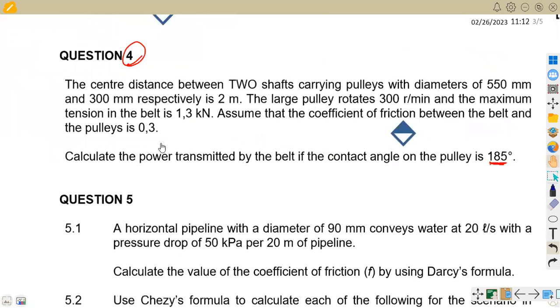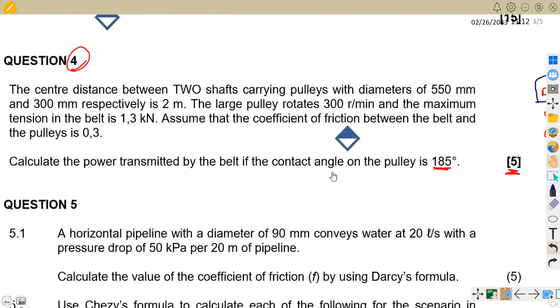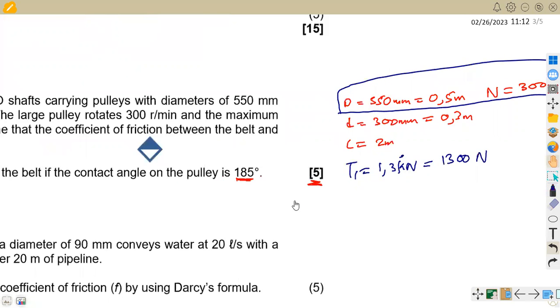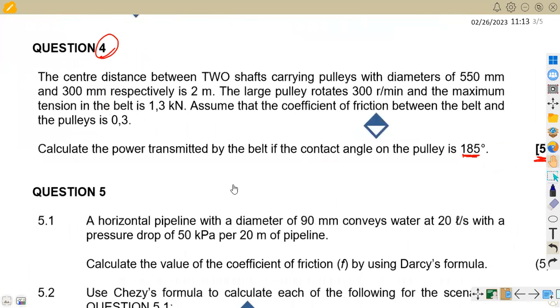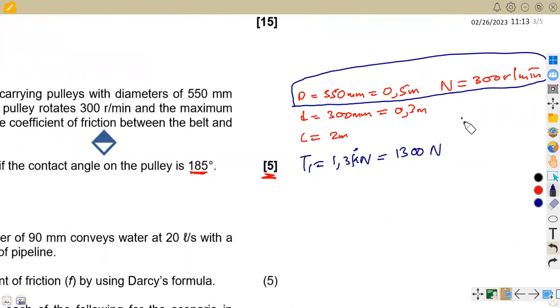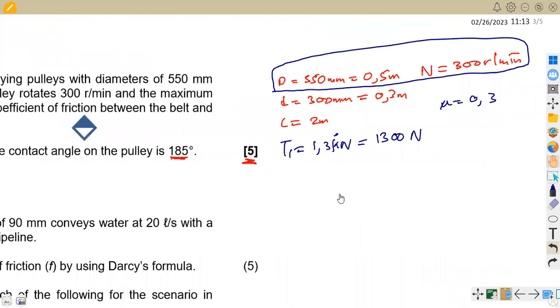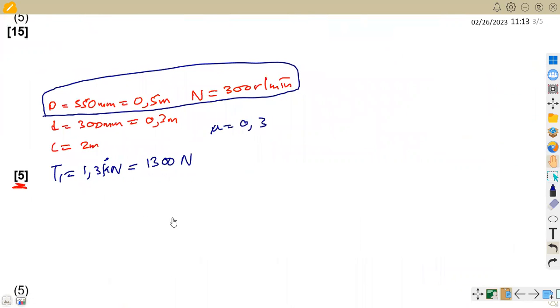We are given the tension in the belt, the maximum allowable tension, which is T1. Remember, that's your tight side. So T1 is 1.3 kilonewton. Kilo means 1000, so by multiplying by 1000, that's 1300 newton. And the friction, the coefficient of friction is 0.3. And we are given also the angle of contact, which in this case we can name it as theta.